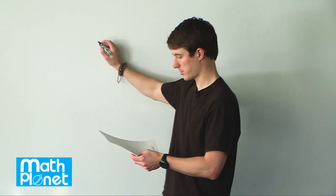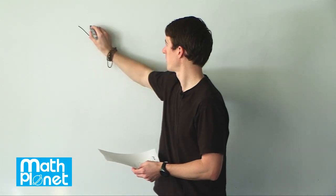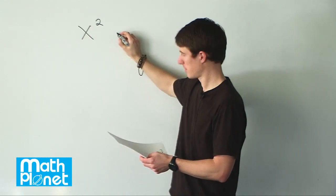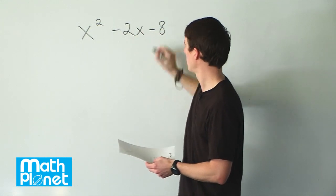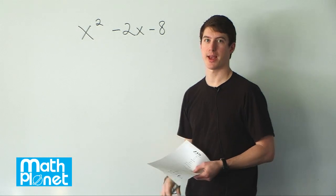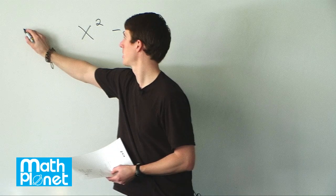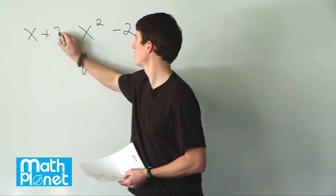Here we have a simple polynomial division. It's just like long division, but with polynomials. We start with the expression x² - 2x - 8. We want to divide this by x + 2.